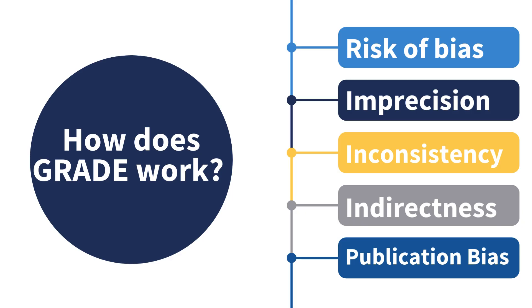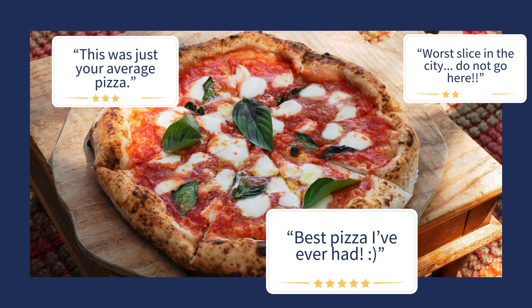Let's look at these five factors using an example from everyday life. When we're deciding whether to go to a restaurant and looking at the restaurant ratings online, we judge the ratings information using the same concepts that authors use to judge the certainty of the evidence about an effect estimate.